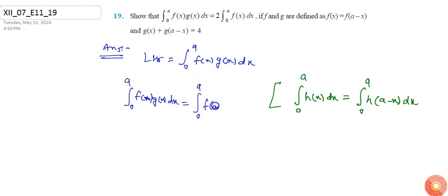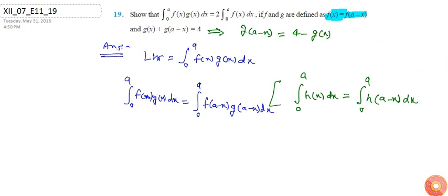f(a-x)g(a-x)dx. Now from the question, it is given that f(a-x) equals f(x), and from here I can calculate g(a-x) which is 4 minus g(x). So if I put